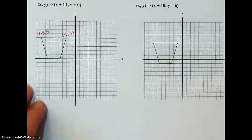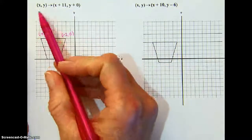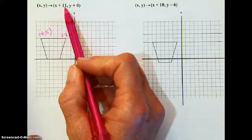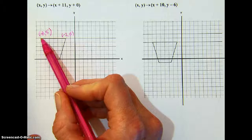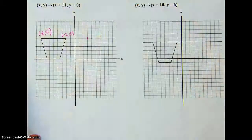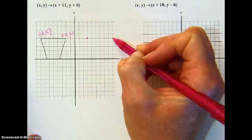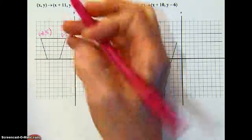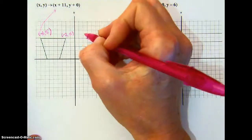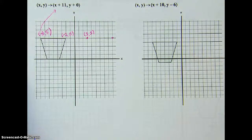Let's do a translation. We have a labeled triangle and we want to apply a horizontal shift of positive 11. Take each point and shift it 11 units to the right: counting out 11 gives the new point location. Mathematically, substituting x = −8 and adding 11 gives positive 3 for the new x-value. The y-value doesn't change. Complete the other points the same way to finish the translated shape.